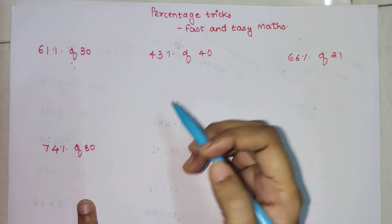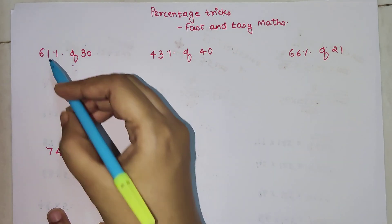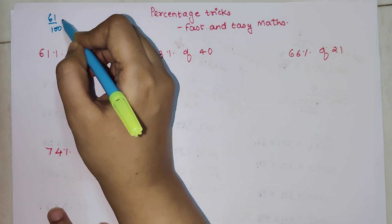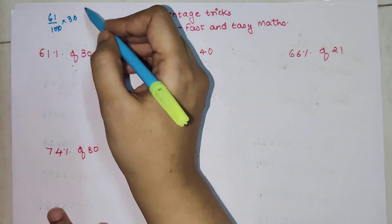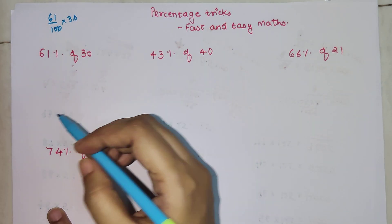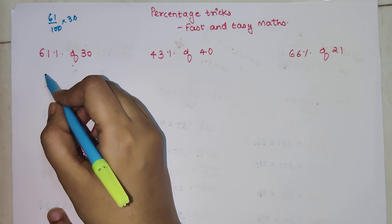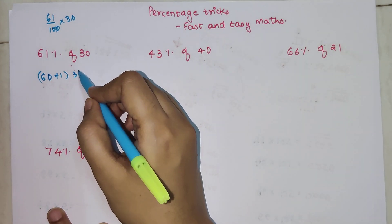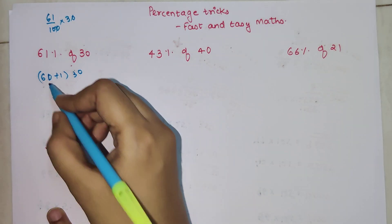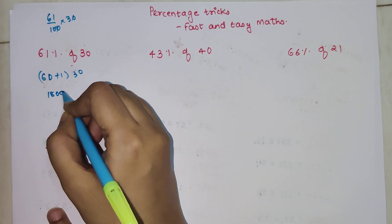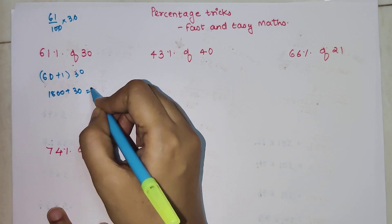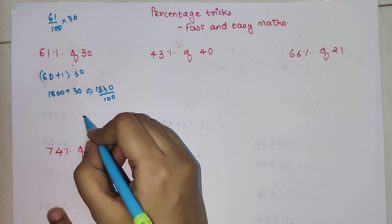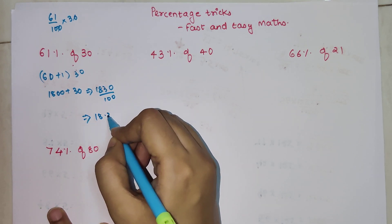We have 61 percent of 30. Normally you would have done 61 upon 100 into 30, then zeros cancel and then you start multiplying. But here you can do 60 plus 1 into 30. So you get 1800 plus 30, which is 1830 divide by 100. Your answer is going to become 18.3.